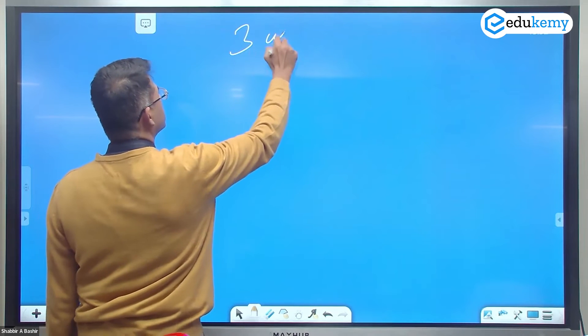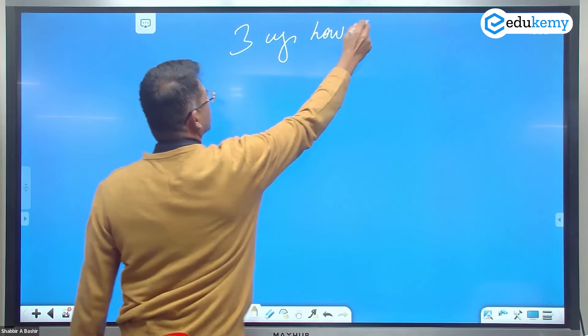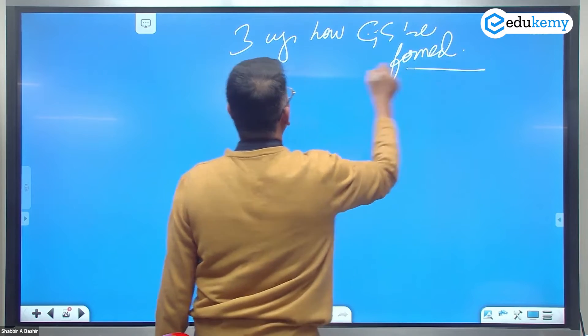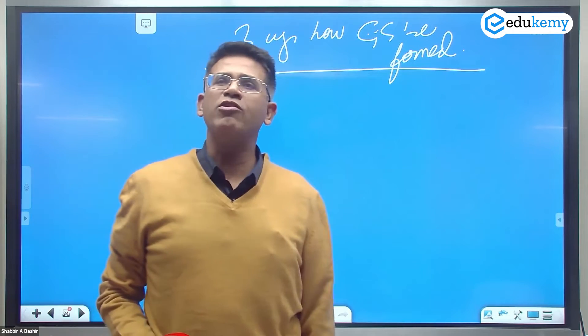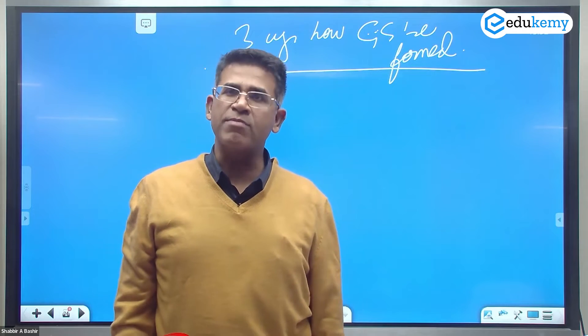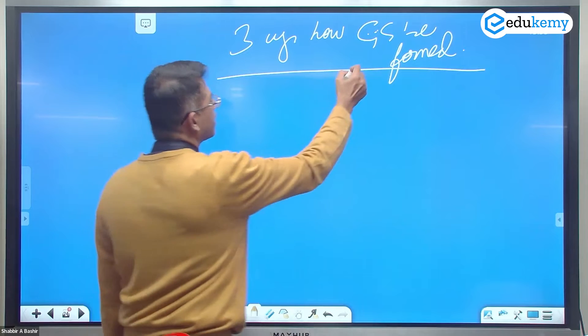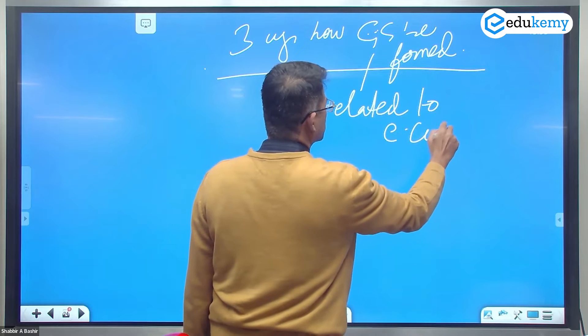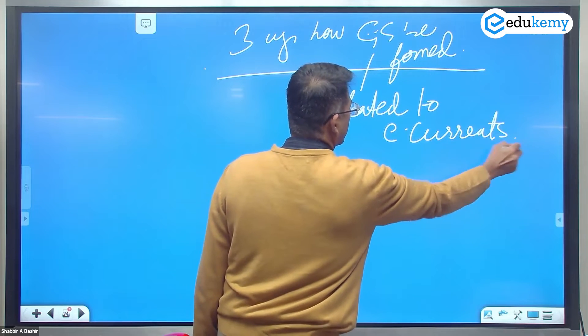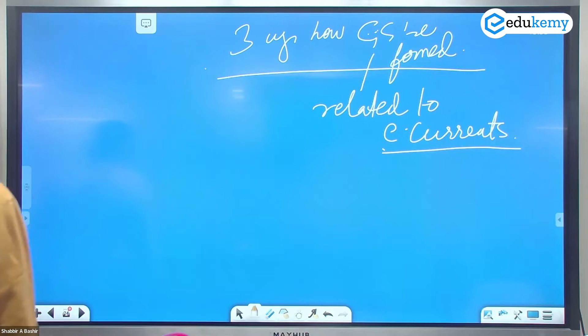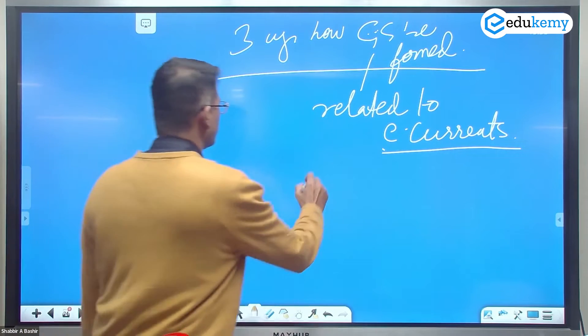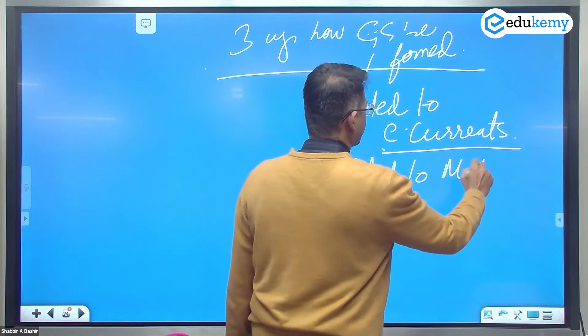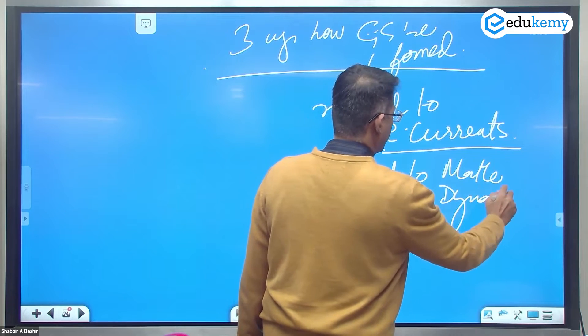There are three ways how geosynclines are formed. And this is related to convection currents. This is related to mantle dynamism.